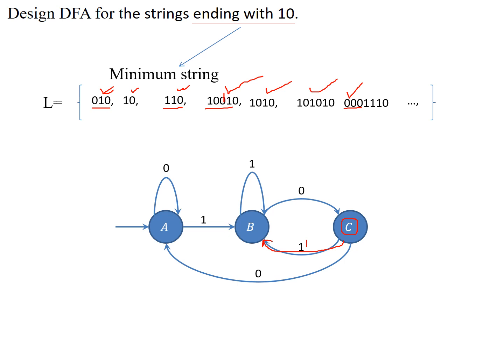For strings like zero-zero-zero-zero-one-one-one-one-one-zero, these are also accepted. Any combination ending with one zero will be accepted by state C. So C is the accepting state. I hope you understand this concept — the DFA correctly accepts all and only strings ending with one zero.